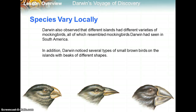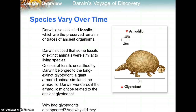Darwin also observed that different islands had different varieties of mockingbirds, all of which resembled mockingbirds he had seen in South America. In addition, Darwin noticed several types of small brown birds on the islands with beaks of different shapes. He also saw that species vary over time based on his fossil collection. Some fossils of extinct animals were similar to living species — one set of fossils belonged to the long-extinct glyptodon, a giant armored animal similar to the armadillo.